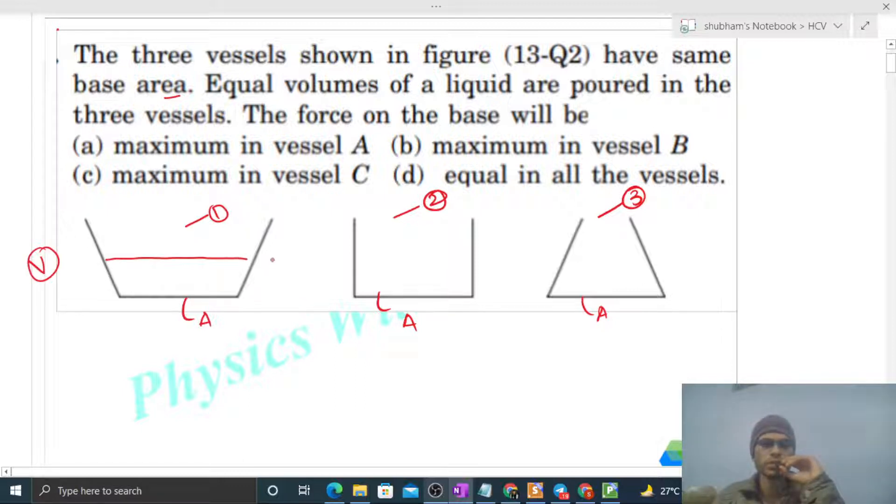Then you can see there will be some height of this liquid in vessel 1, let's call it h1. This is the height of the liquid in vessel 1. Height of the liquid in vessel 2 will be h2, and height of the liquid in vessel 3 will be h3.